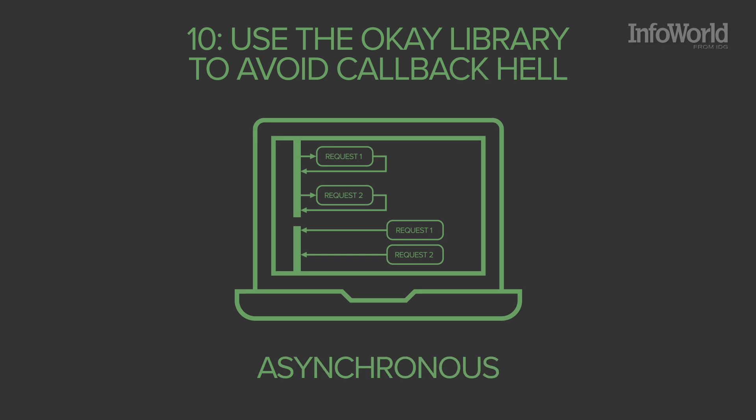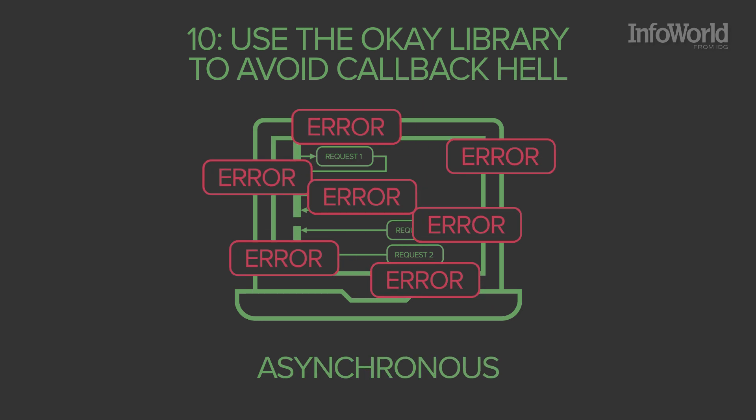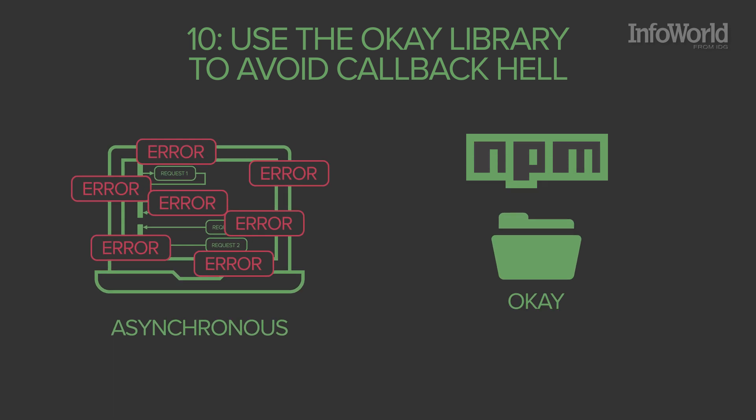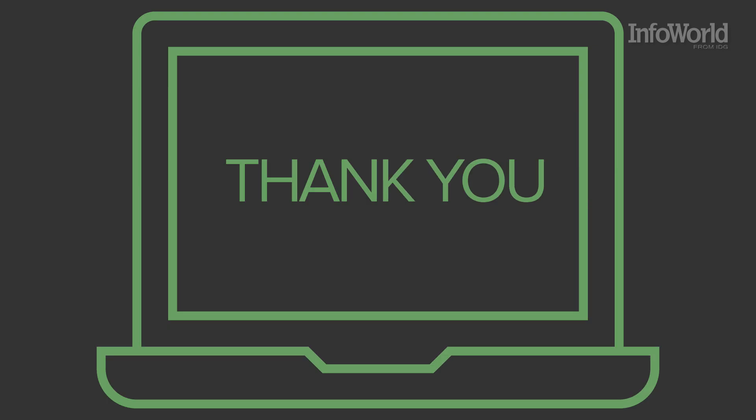It's hard to catch errors in asynchronous code unless you check every error return value in every callback. The resulting messy code is sometimes called callback hell. The NPM ok package allows you to easily bubble errors up your callback chain. Thank you for joining us today for these 10 Node.js tips and tricks.